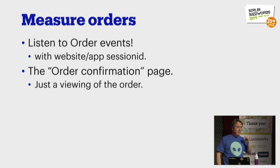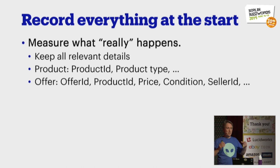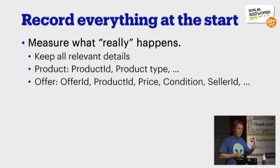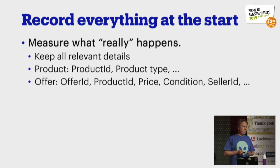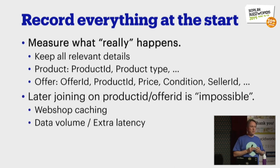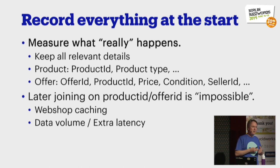We also denormalize everything: when the event occurs, we record as many attributes as we can. We record the product number, things like the product type, the title, at the moment of creating the page. Also, if we have an offer from a seller, we record the price, the condition, and seller ID. People have said you only need the offer ID because the others can be joined later. But there are two very important reasons why you can't. Our webshop has caching built in, so even within a second you can have a situation where you showed five euros when the reality was six euros.